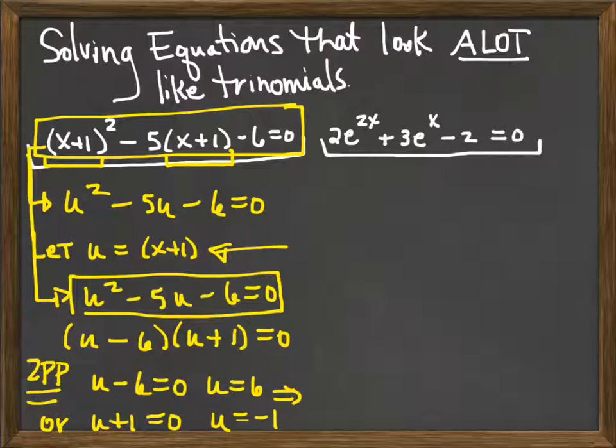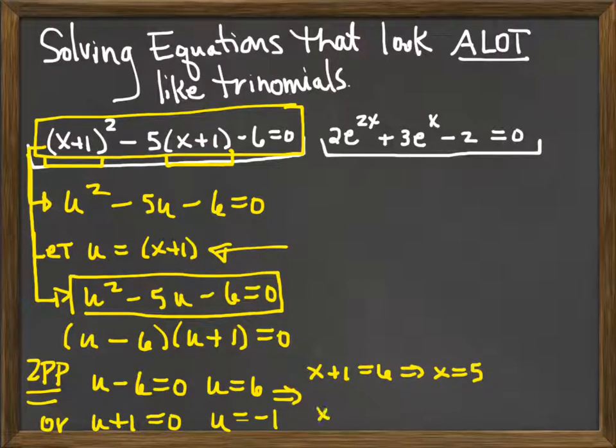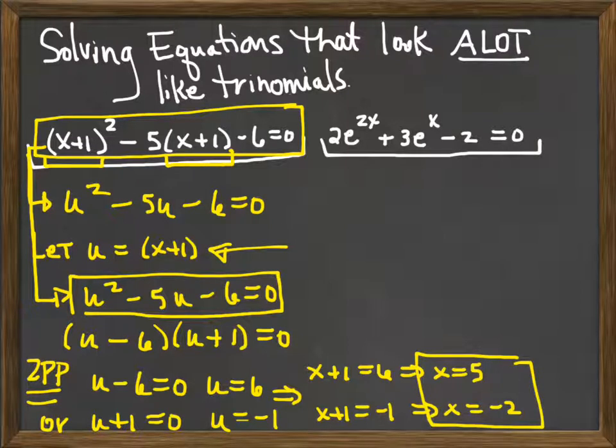So if u is equal to x plus 1 and u is 6, this means x plus 1 equals 6 or x equals 5. If u equals negative 1, that means x plus 1 equals negative 1 and this implies x equals negative 2. So I was able to solve my original equation by rewriting it as a quadratic that looked familiar.